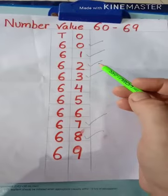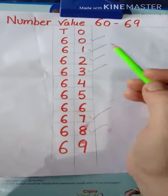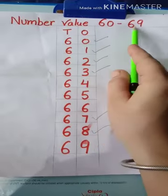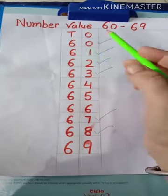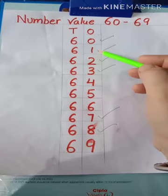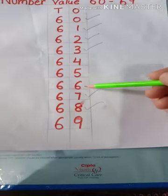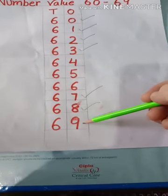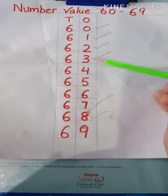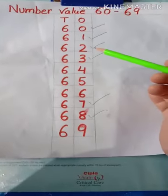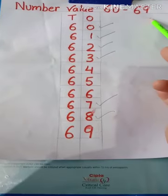Before starting the concept of what comes after, first I will introduce the number value 60 to 69. So that is tens and ones place: 60, 61, 62, 63, 64, 65, 66, 67, 68, and 69. Whatever we have new numbers, that is 60 to 69.